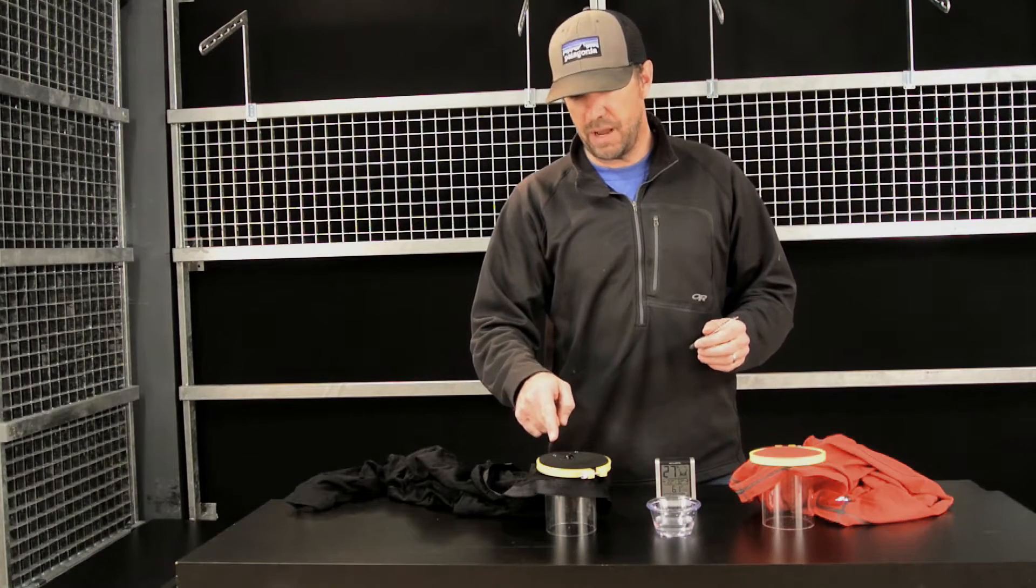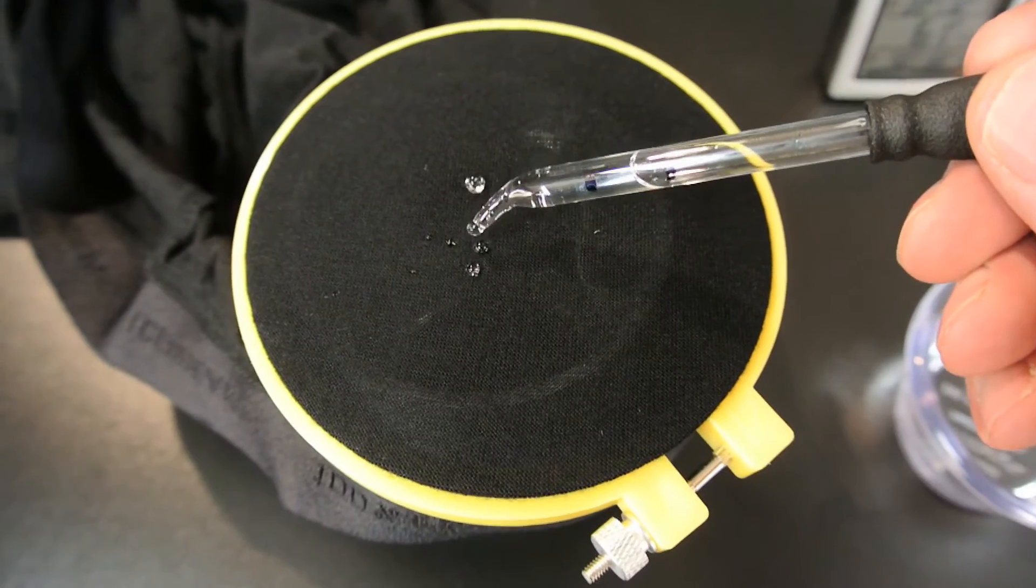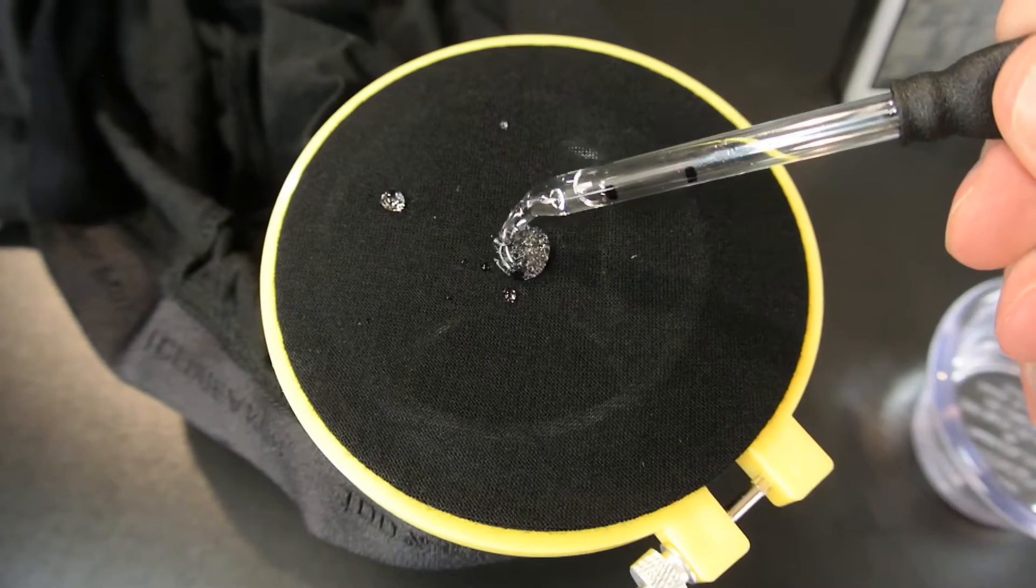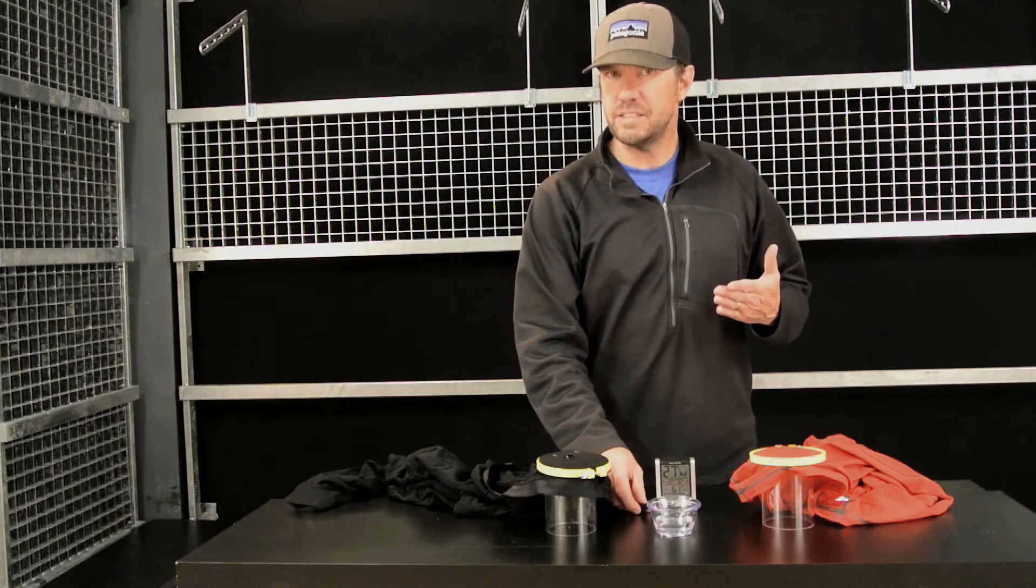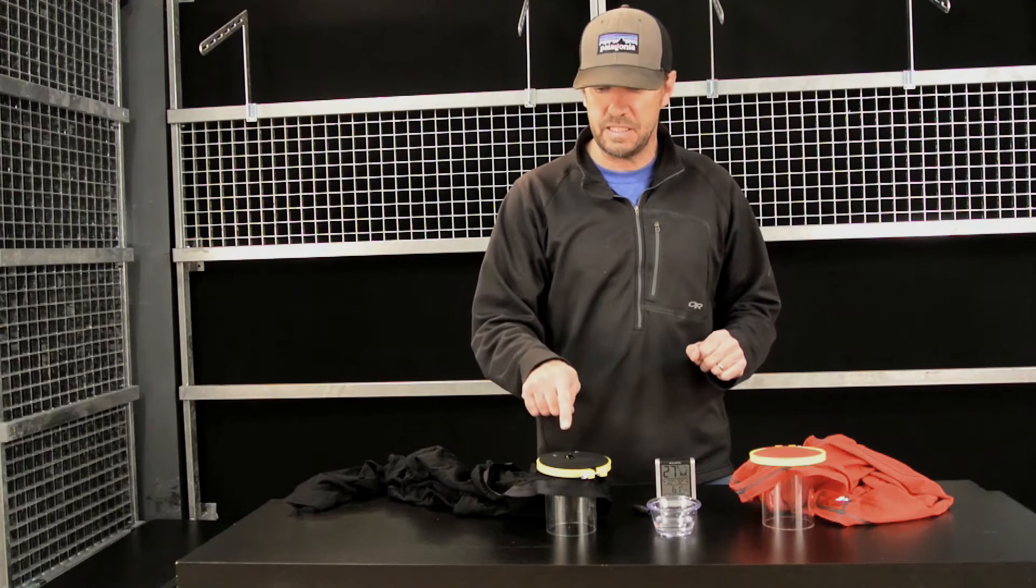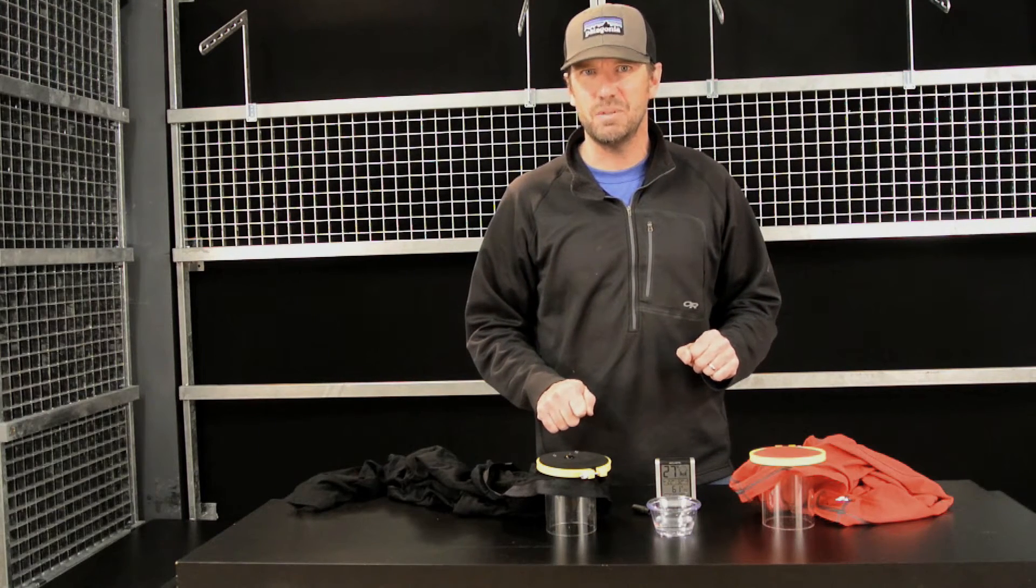This Merino fabric is still supporting a drop of water, and it's been several minutes since I dropped this water onto this fabric. Most good base layers should absorb that moisture pretty quickly, but clearly you can see we're probably going to ruffle a couple feathers as we conduct these tests moving forward.